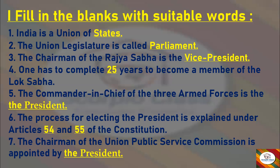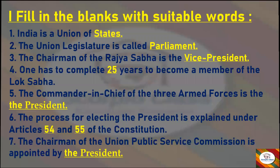Next: The commander-in-chief of the three armed forces is the — answer: President. Next: The process for electing the president is explained under Articles — and — of the Constitution — answer: Articles 54 and 55. Next: The chairman of the Union Public Service Commission is appointed by — answer: The President. With this we finish our first main, Fill in the Blanks.